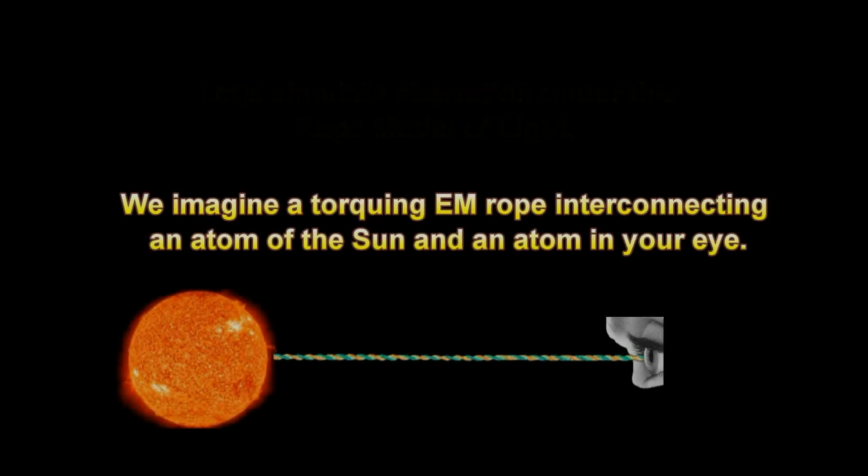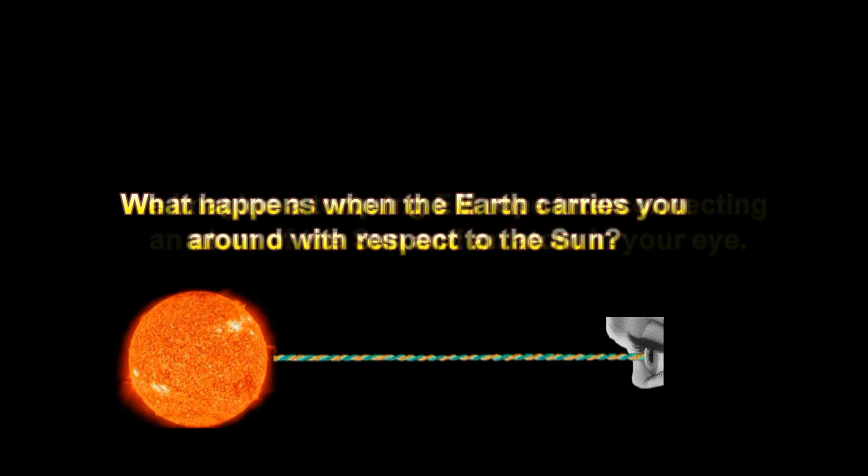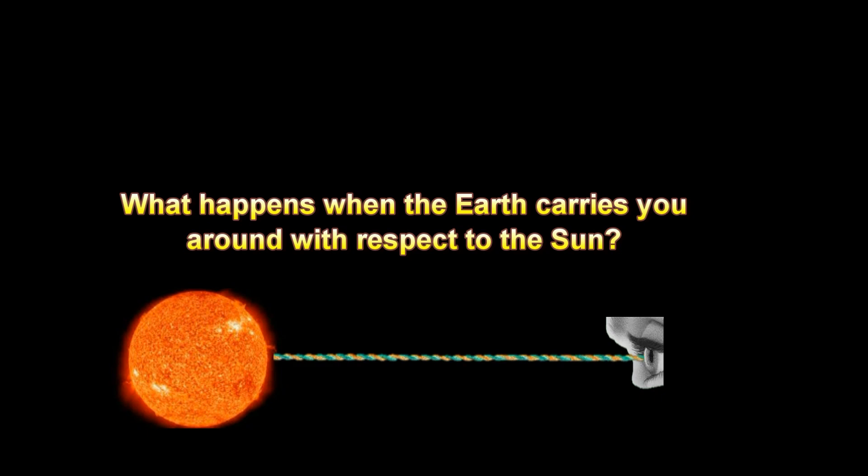Let's simulate aberration under the rope model of light. We imagine a torquing electromagnetic rope interconnecting an atom of the sun and an atom in your eye. What happens when the Earth carries you around with respect to the sun?